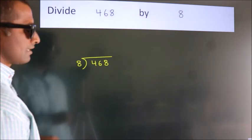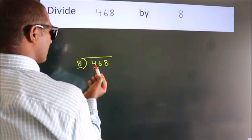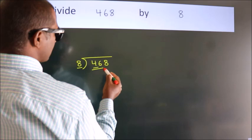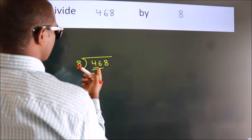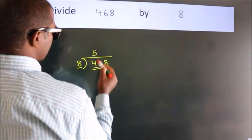Next, here we have 4, here 8. 4 is smaller than 8, so we should take two numbers, 46. A number close to 46 in the 8 table is 8 fives 40.